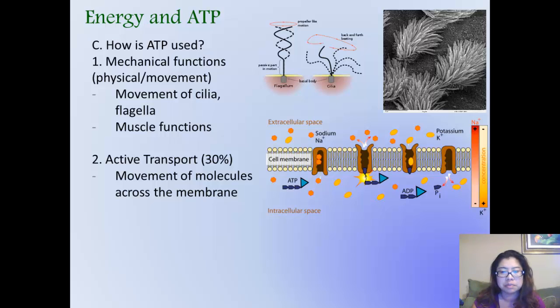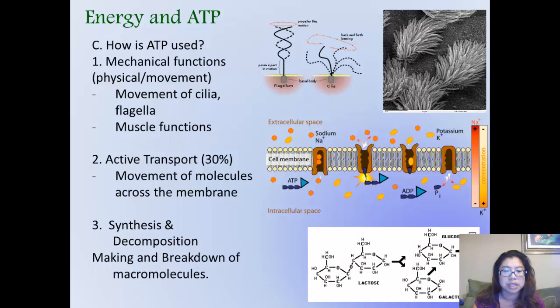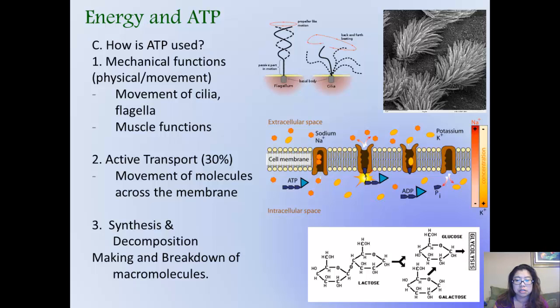We also have ATP used in assistance and also for the making of synthesis and decomposition of chemicals, making and breaking down of macromolecules. Synthesis means making, decomposition means breaking down. Here is an example of lactose, which is the sugar found in milk, breaking down into galactose and glucose. Eventually, glucose will be put in through glycolysis, which is in cellular respiration.